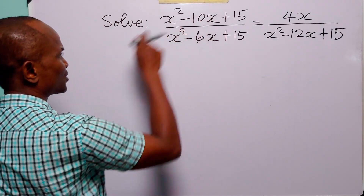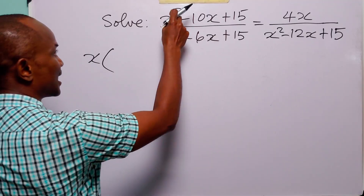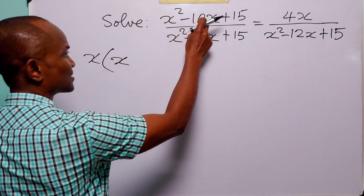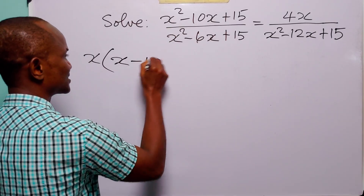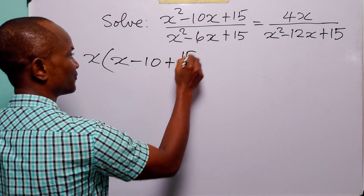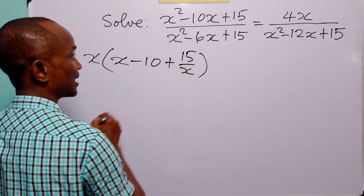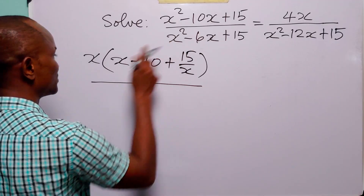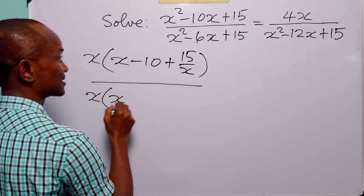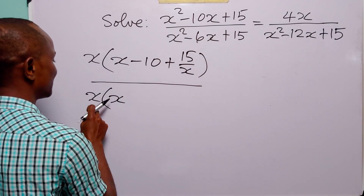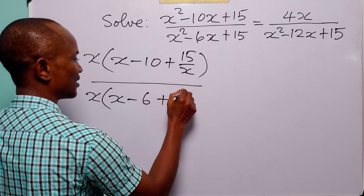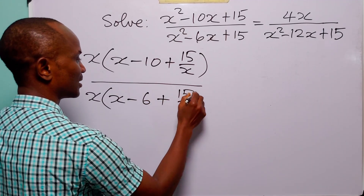Starting with the first one, we have x into: x squared divided by x is x, minus 10x divided by x is minus 10, and plus 15 divided by x is plus 15 over x. And this is over — we do the same thing — we have x: x squared divided by x is x, minus 6x divided by x is minus 6, and plus 15 divided by x is plus 15 over x.